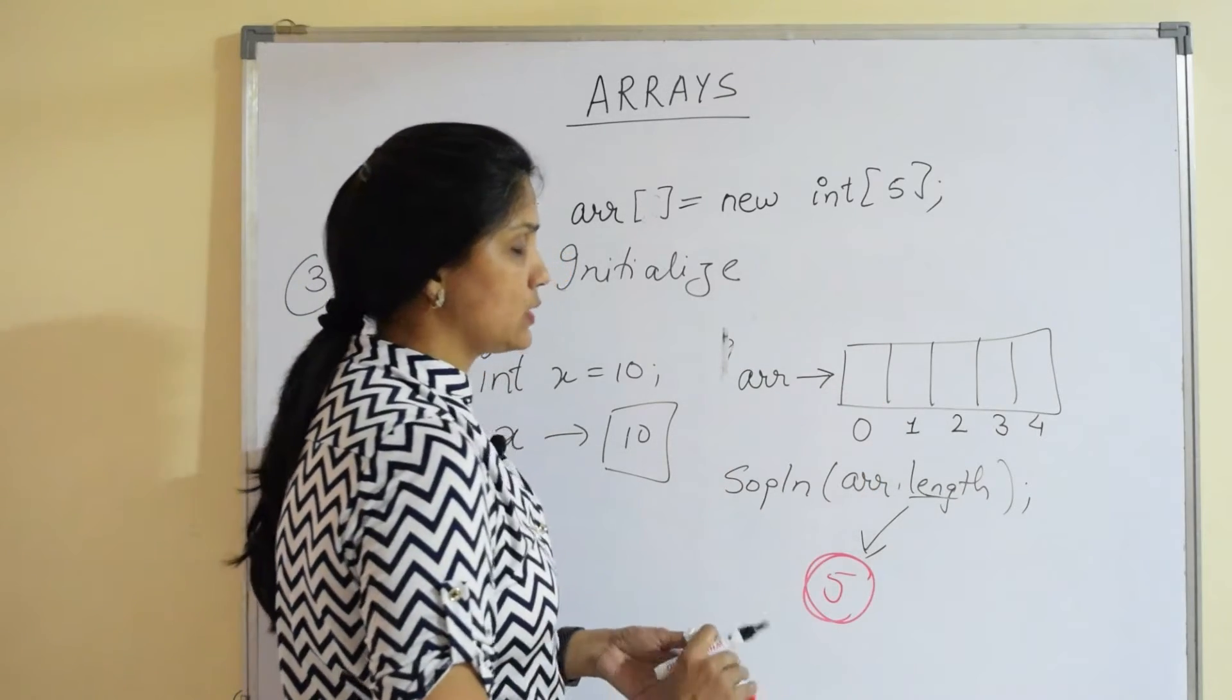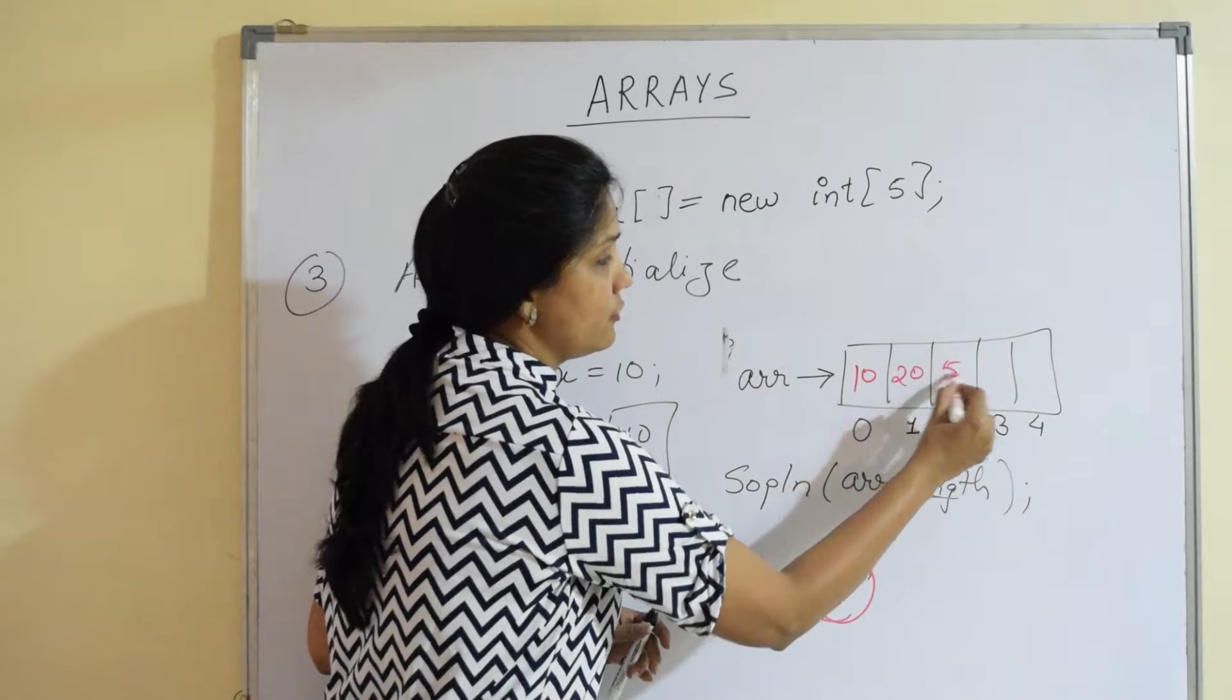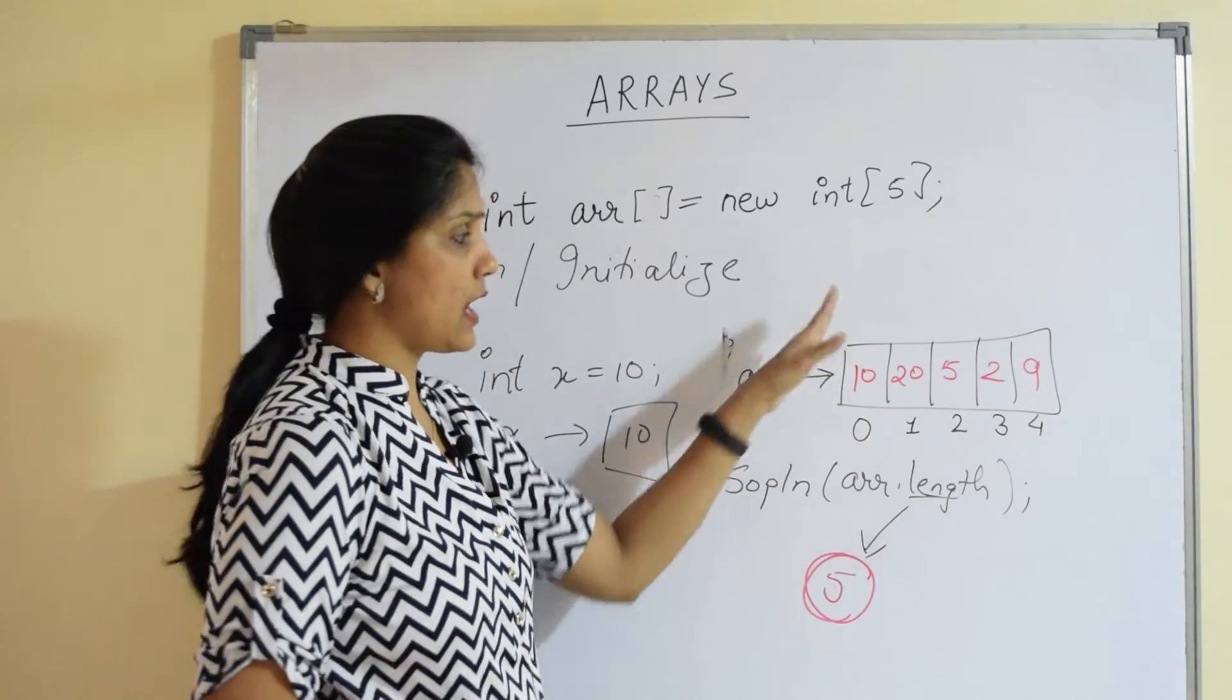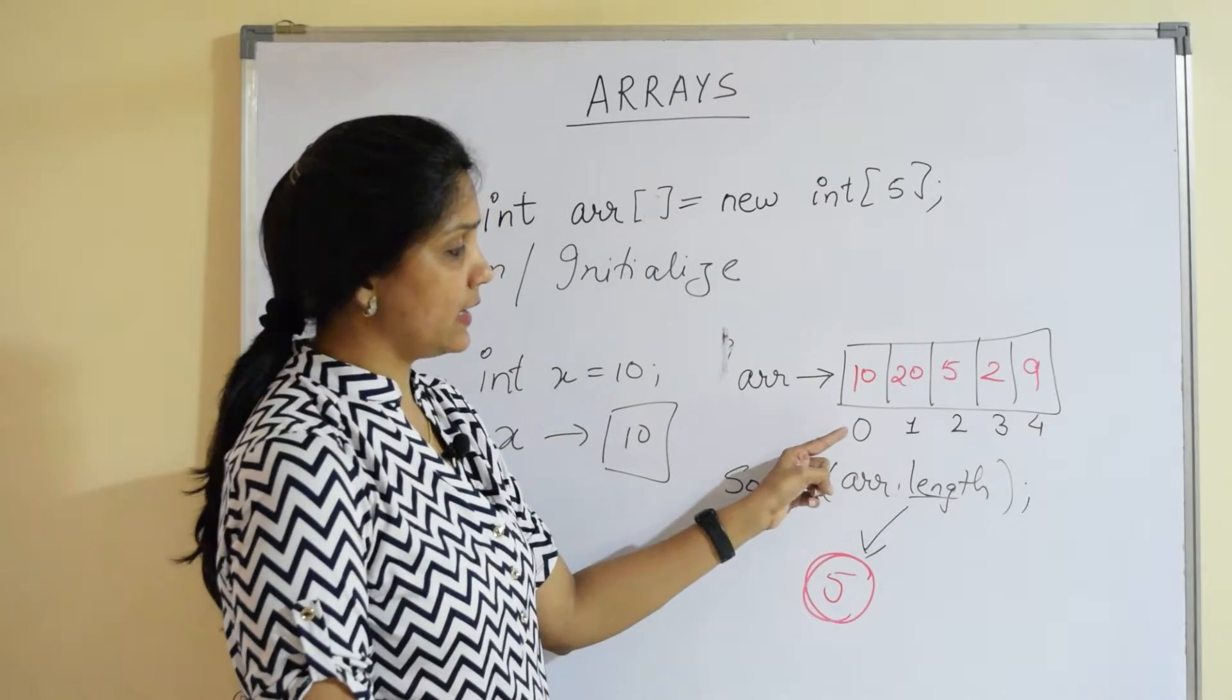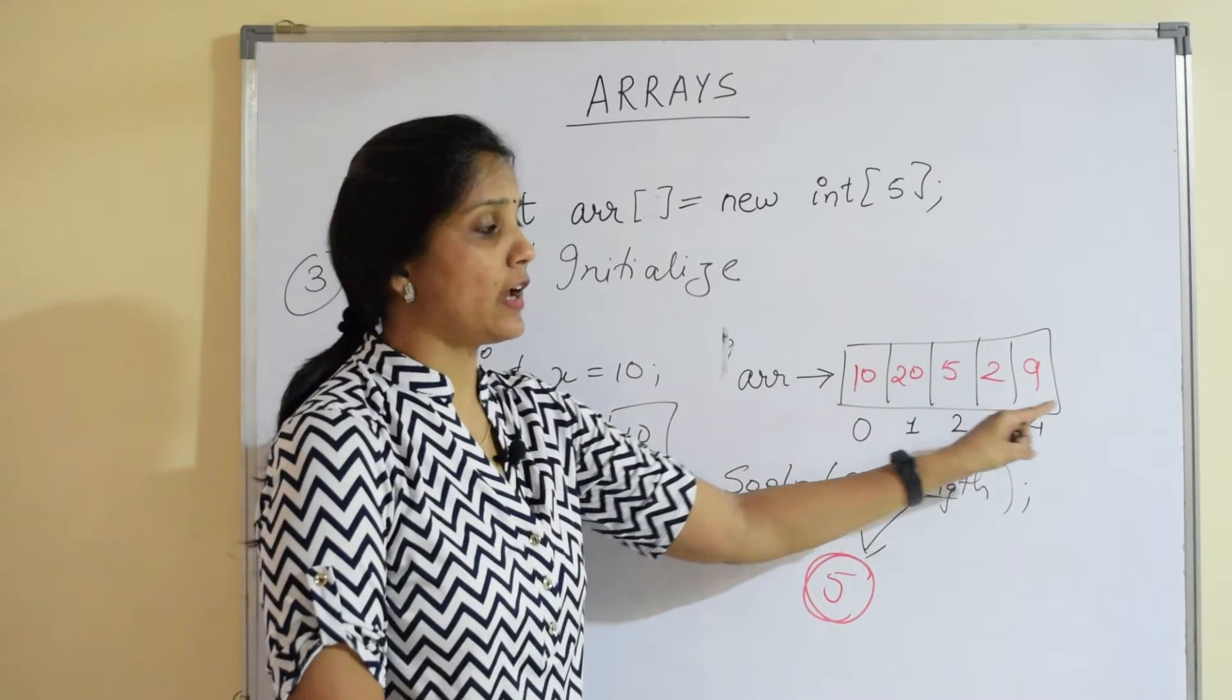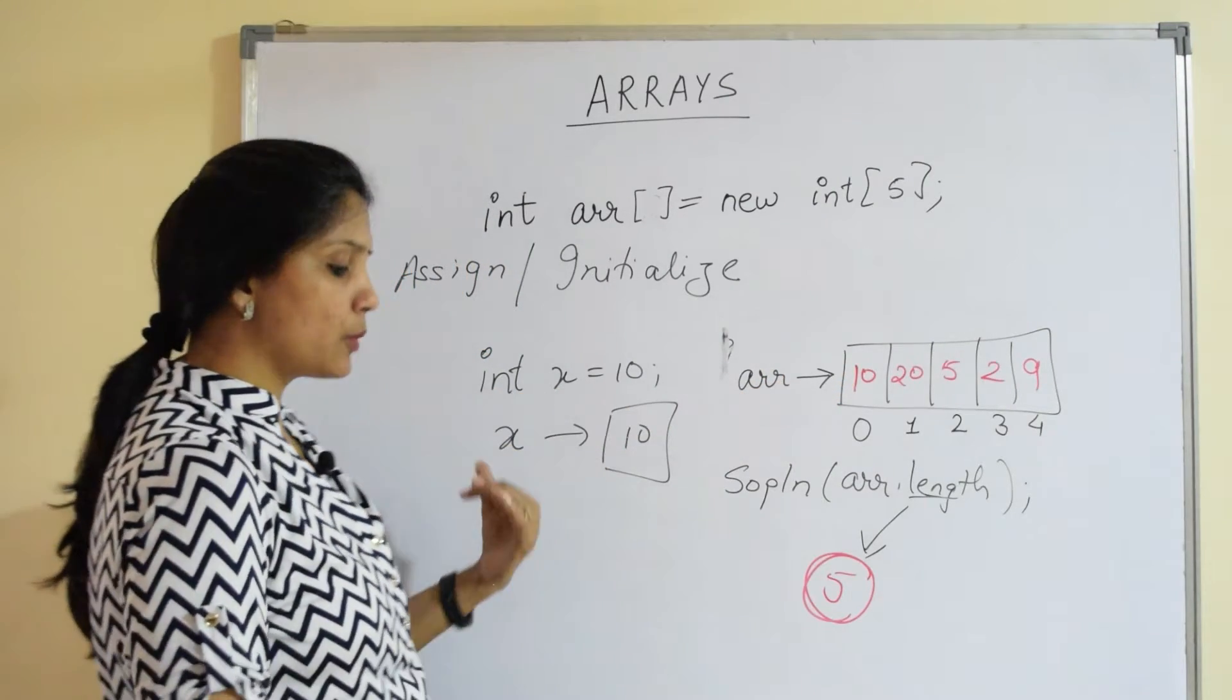Now suppose I store values in the array. Say I have 10, I have 20, I have 5 to 9. Now graphically I can just represent: I created a row and I marked it with 5 columns and I can just store 5 values. So I can say at index 0, I have a value 10. Index 1, I have a value 20. Index 2, I have a value 5 and so on. But how do we resemble this programmatically?